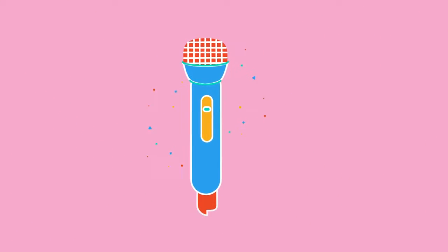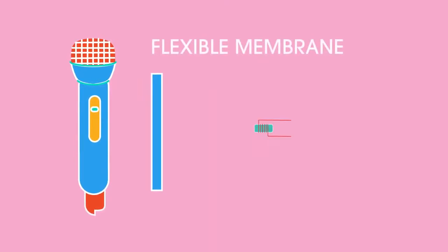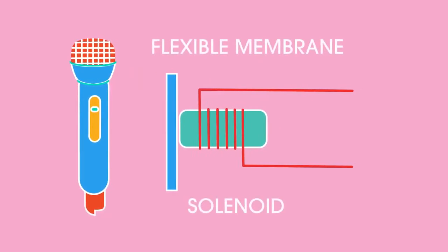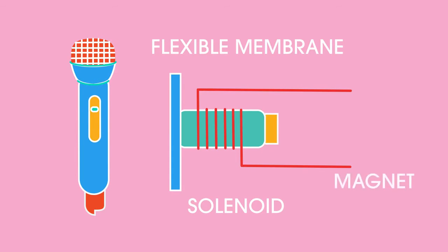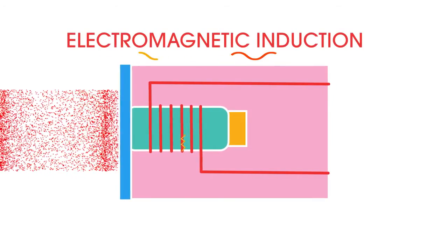Now let's look at a simple microphone. A flexible membrane is attached to a solenoid, which slips over a cylindrical permanent magnet. When assembled, it looks like this. Some of you might be thinking this looks a bit like a loudspeaker, and you would be correct. An incoming longitudinal sound wave causes the membrane to move backwards and forwards. This moves the solenoid to and fro over the magnet. This generates a small electrical current in the wire coil by electromagnetic induction.